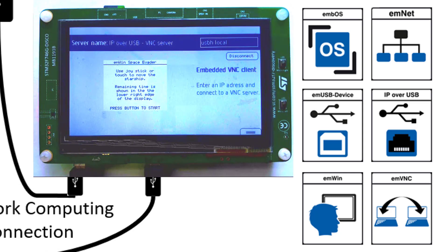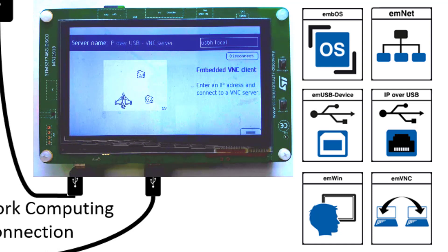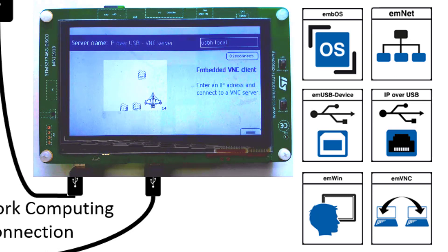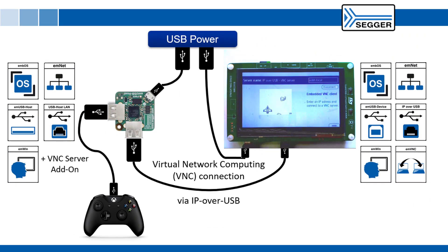In this demo, the M-Power USB host board runs a simple game which can be viewed on the display of the STM32 discovery board. Pressing button A on the game controller starts the game. The gamepad on the controller can then be used to maneuver the Starship and evade the asteroids.